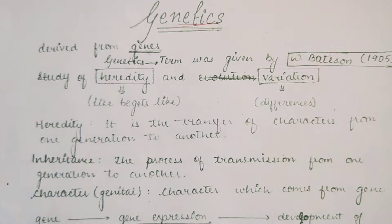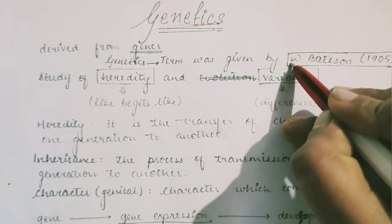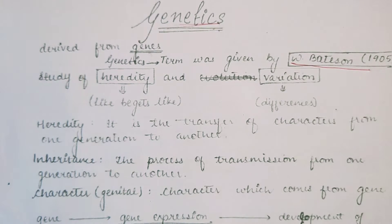Genetics is derived from the word 'gene'. First of all, the term genetics was given by W. Bateson in 1906. The study of genetics means the study of heredity and variation. Heredity means the characters which transfer from one generation to the next generation.